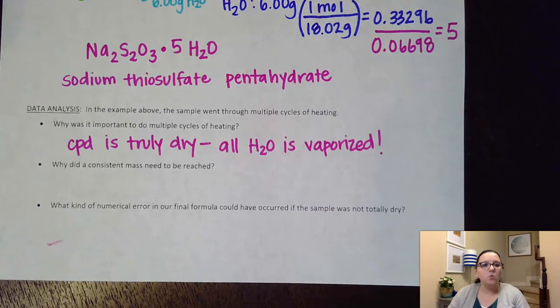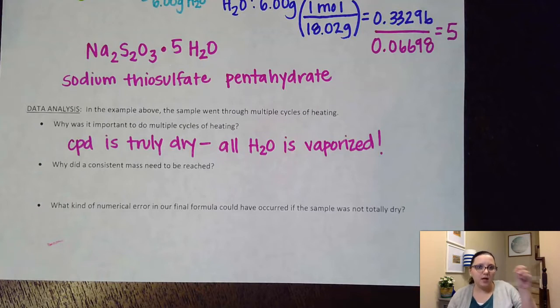So then it says, hey, why did a consistent mass need to be reached? Well, it's kind of the same thing as above. If I'm doing this multiple times, and I'm ensuring that every time I'm heating it and letting it cool and massing it out, if I'm ensuring that that mass that I'm getting is staying constant, then again, that means that no more water is being lost.